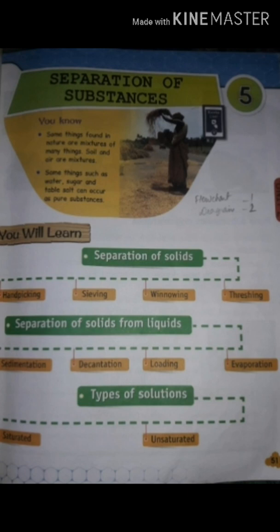Next you will learn about separation of solid from liquid. There are 4 methods: first is sedimentation, second is decantation, third is loading, and fourth is evaporation. The third thing you will learn here is types of solution. There are 2 types of solution: first is saturated and second is unsaturated.